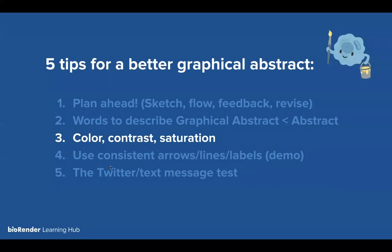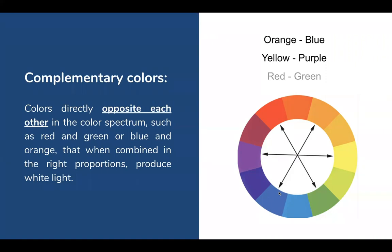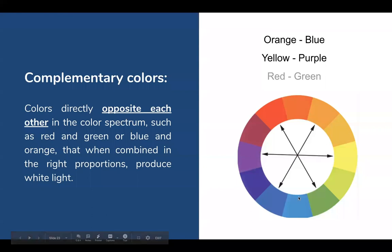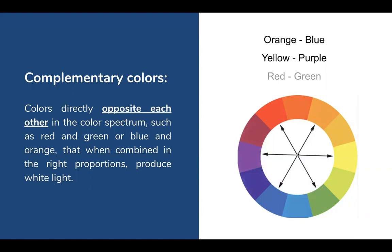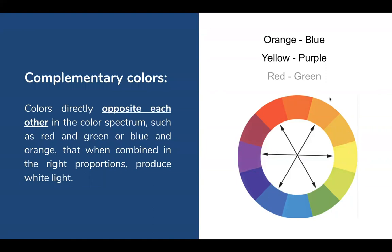Tip three: color contrast and saturation. If you've attended our previous webinars, we talk a lot about complementary colors — basically opposite colors on the color wheel. Red and green are opposite, blue and orange are opposite, and purple and yellow are complementary. Blue and orange, purple and yellow are really great combinations. Red and green we shy away from a bit for our colorblind audience. Saturation is the level of pigmentation in a color — like a highlighter versus a pastel marker.